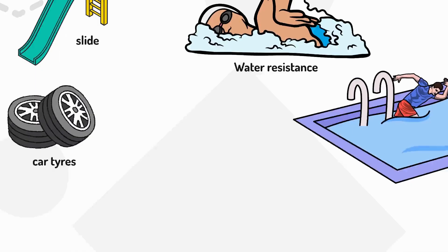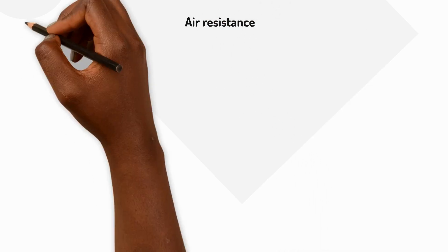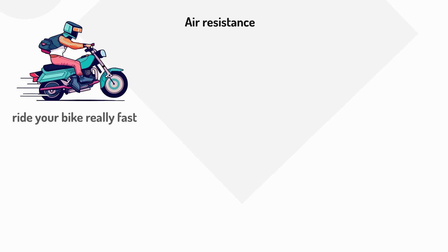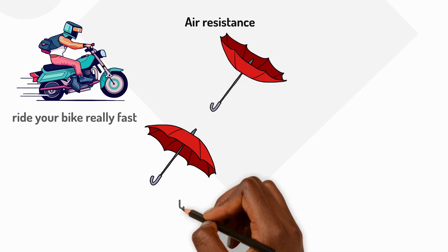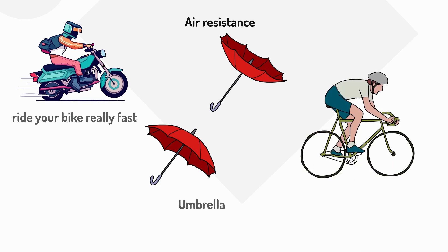Air resistance works the same way. When you ride your bike really fast at the park you can feel the air pushing against you. Or maybe when you hold your umbrella up on a windy day. Air resistance is why racing cyclists bend low to get less air pushing against them.